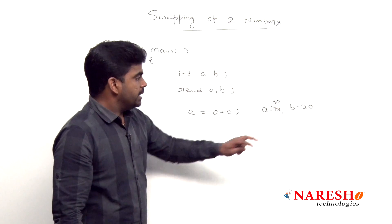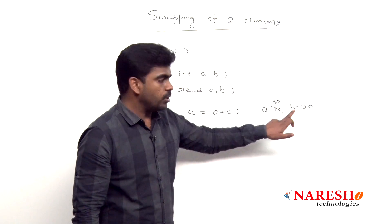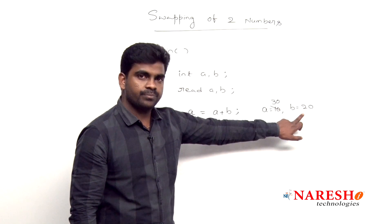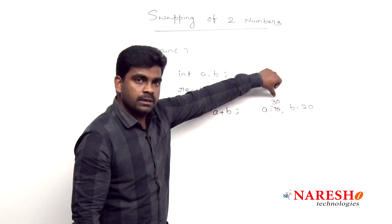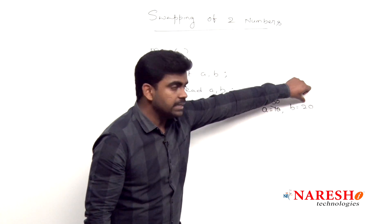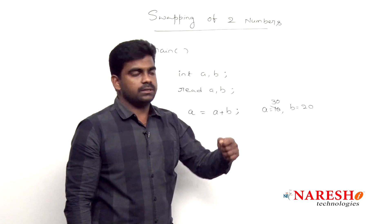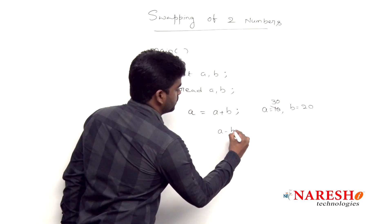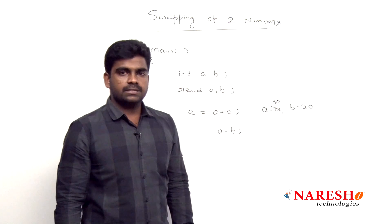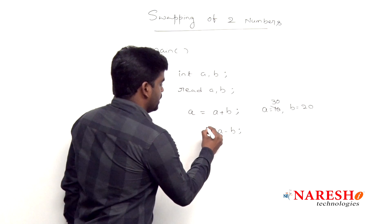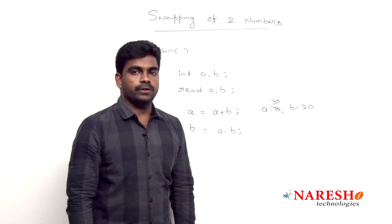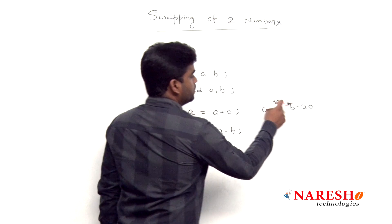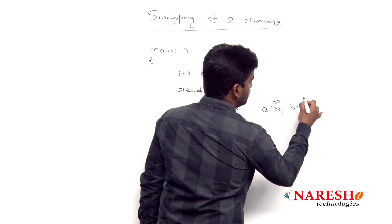And now in b, I want to store the value 10. How you will get the value 10? Whenever you are writing a 30 minus 20, value is 10 only. So here a minus b, 30 minus 20 is 10, we are going to store into b.